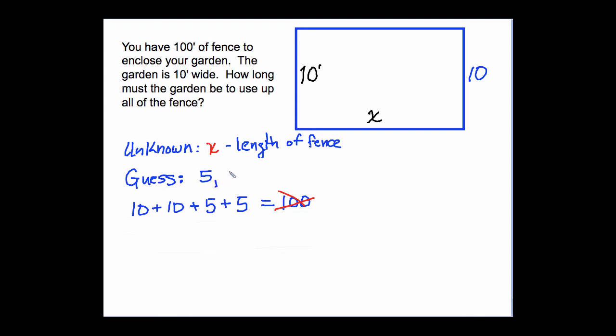Let's guess 8. Now, in order to check 8, it's going to be 10 plus 10 plus 8 plus 8, and that has to equal 100. Well, let's check that. 10 plus 10, that's 20. 8 and 8 is 16. 20 plus 16 is 36. Nope, that doesn't work either.